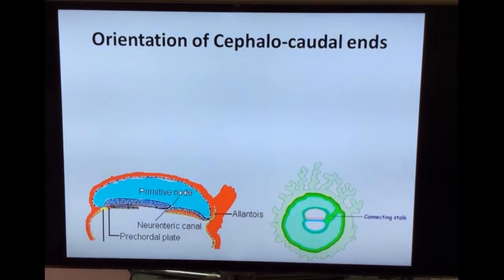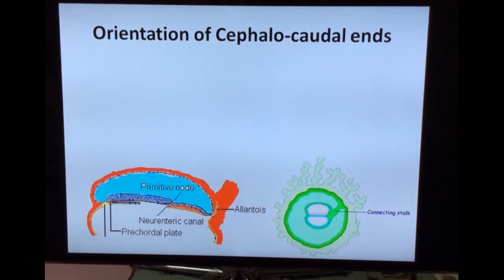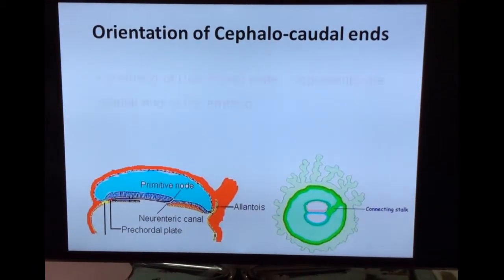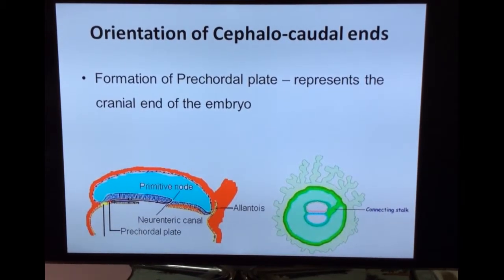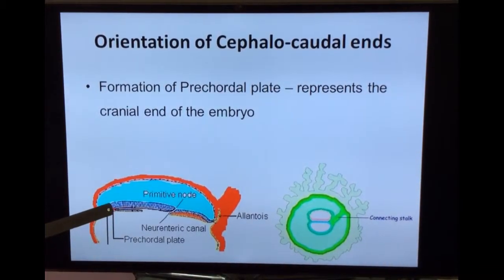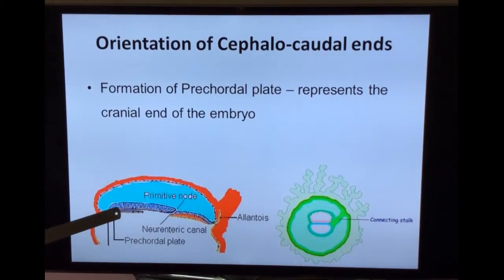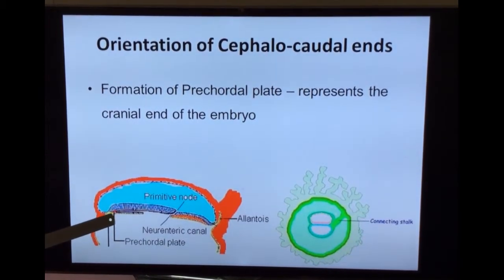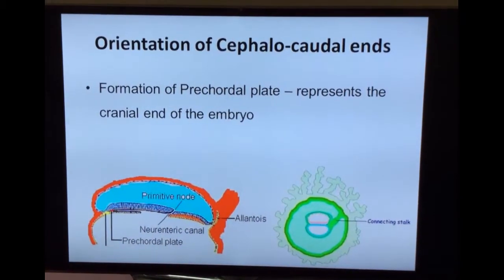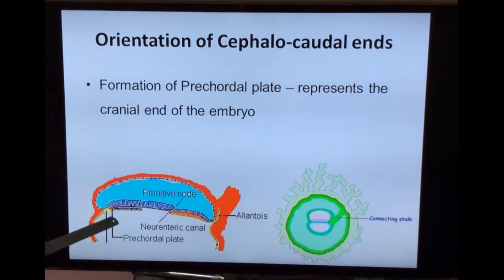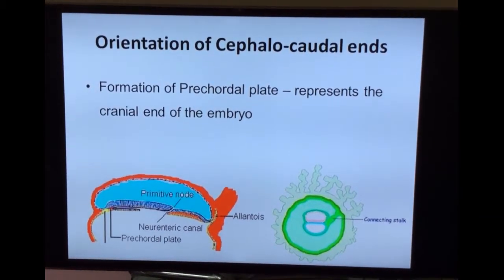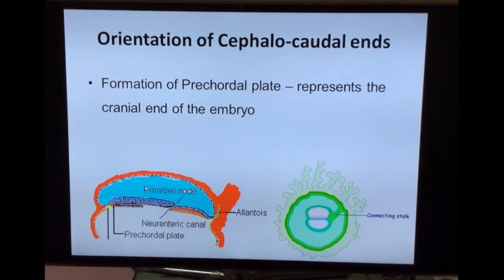The orientation of cephalocaudal ends. Before the third week starts, there will be formation of the pre-cordal plate. The formation of the pre-cordal plate represents the cranial end of the embryo. A few cells in the hypoblast layer become columnar and thick, adherent to the overlying epiblast. This forms the pre-cordal plate, which represents the cranial end of the embryo and also acts as an organizer for the development of the head region.